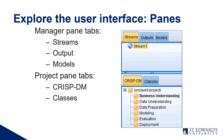You have your project pane tabs as well. We looked at the CRISP-DM method last week. This is where you archive overall projects — you can have multiple streams in a project. This is the step-by-step method we talked about last week with CRISP-DM and where to find it in the system.